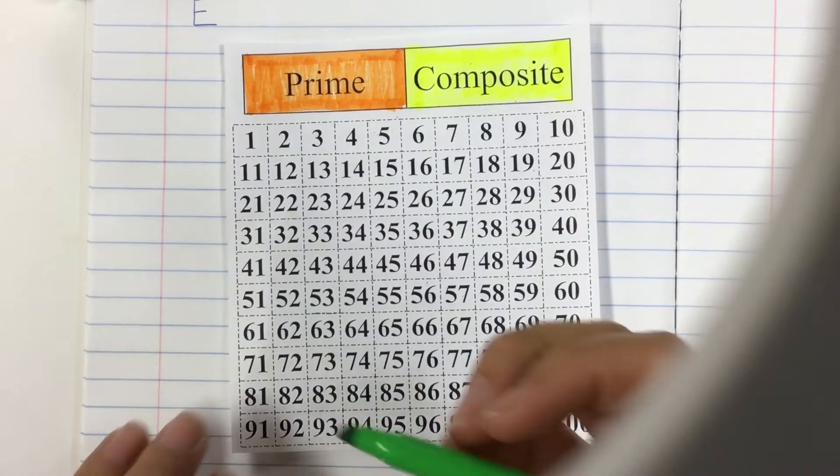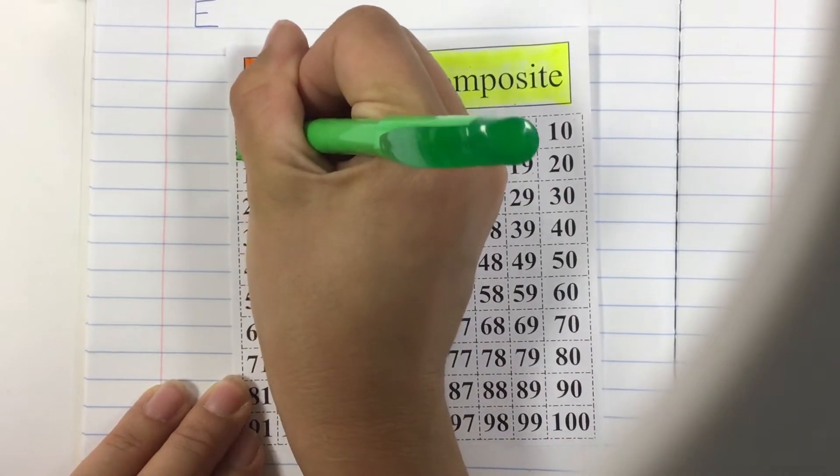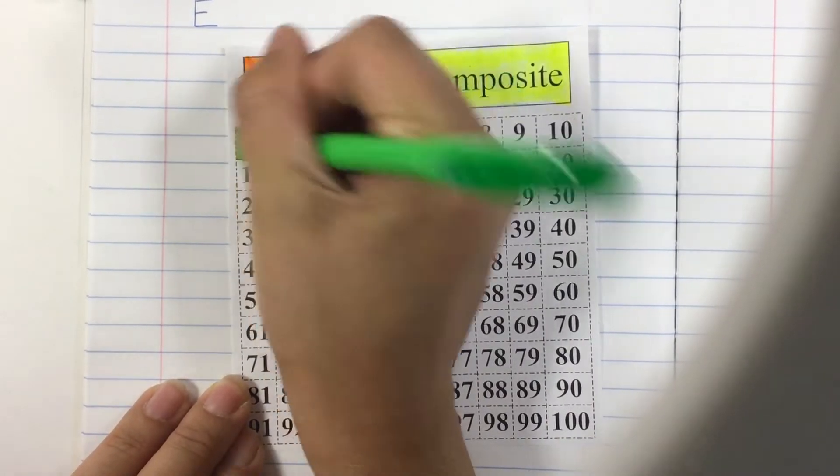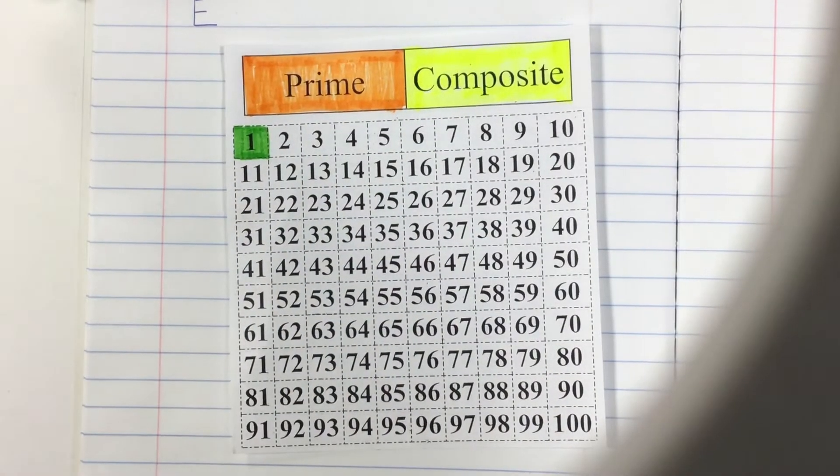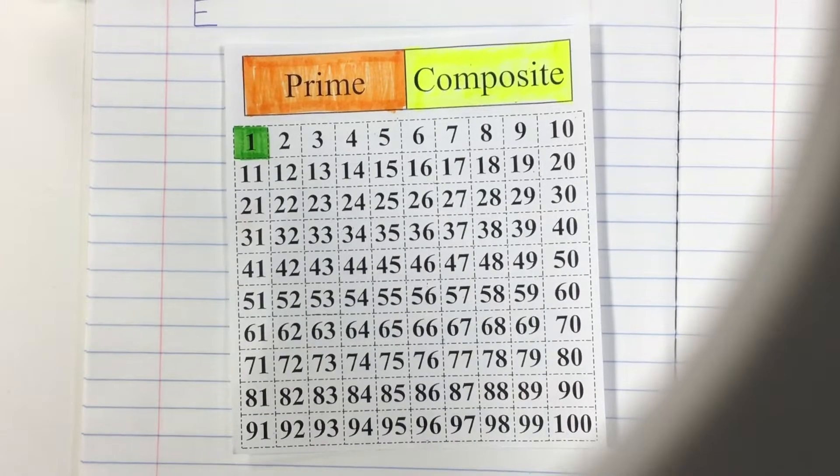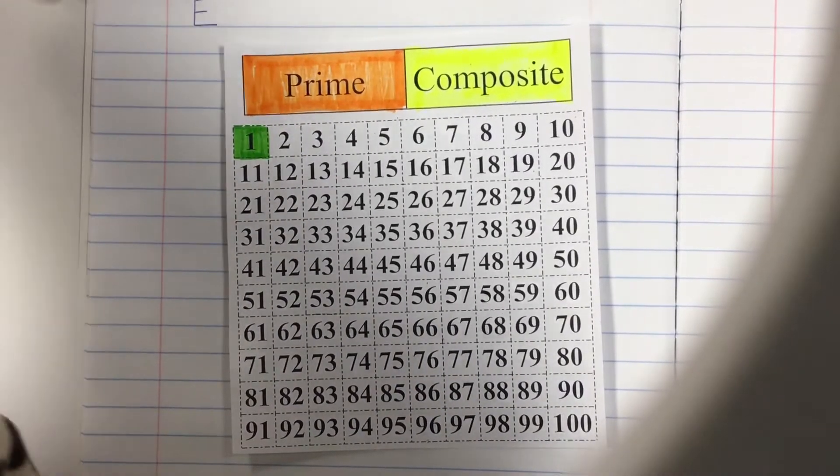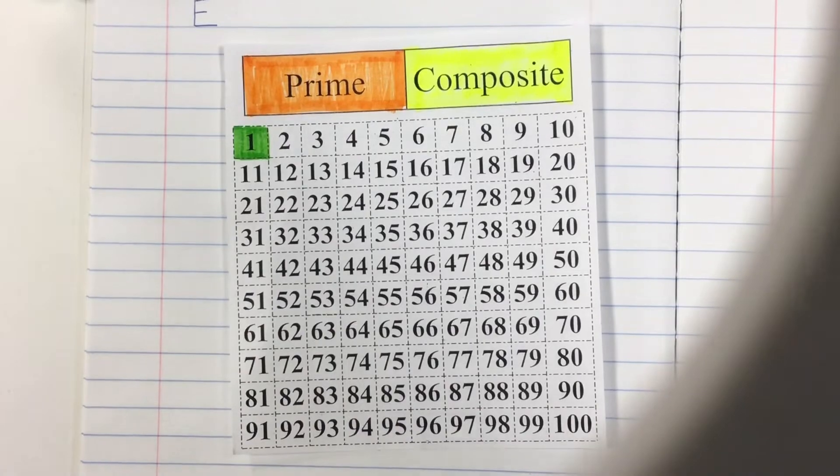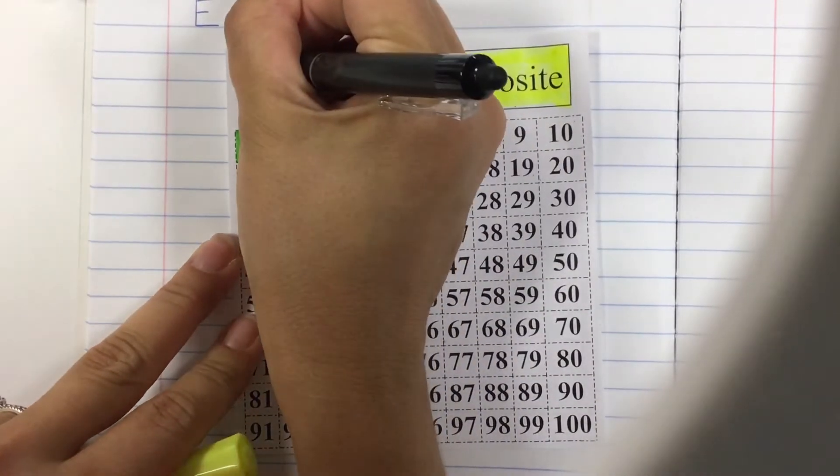We discussed yesterday that one is neither prime nor composite because it only has one factor and that's a factor of one. To be prime we discussed that prime numbers have exactly two factors. So a good thing to put on your notes here under prime is exactly two factors.